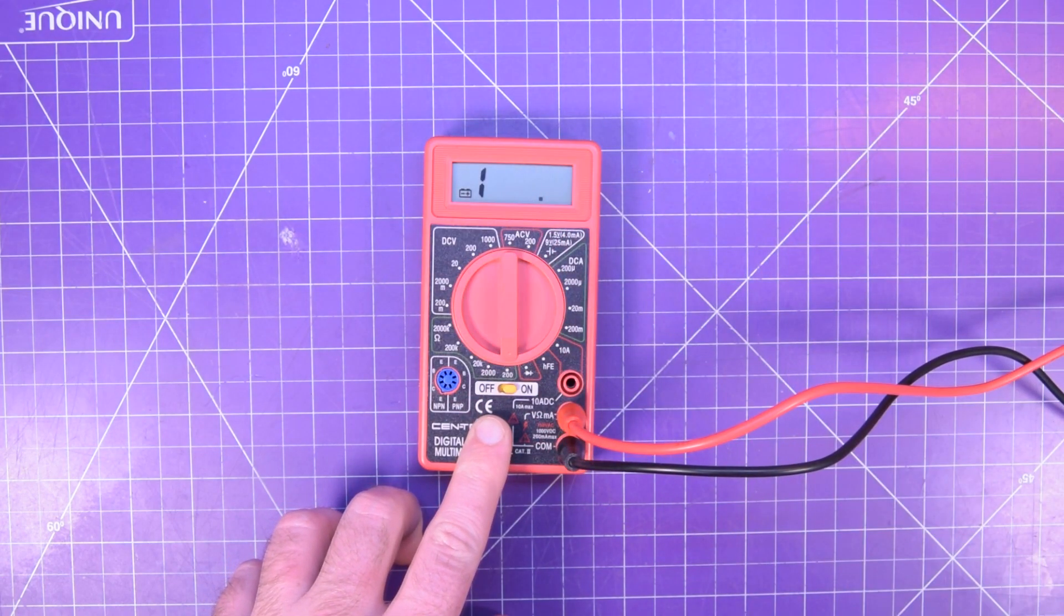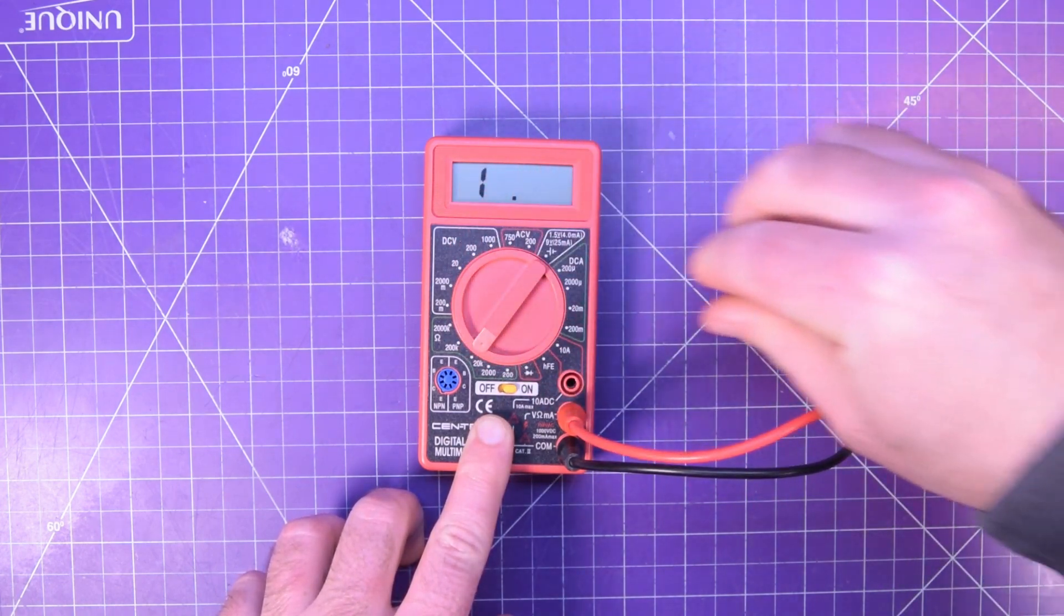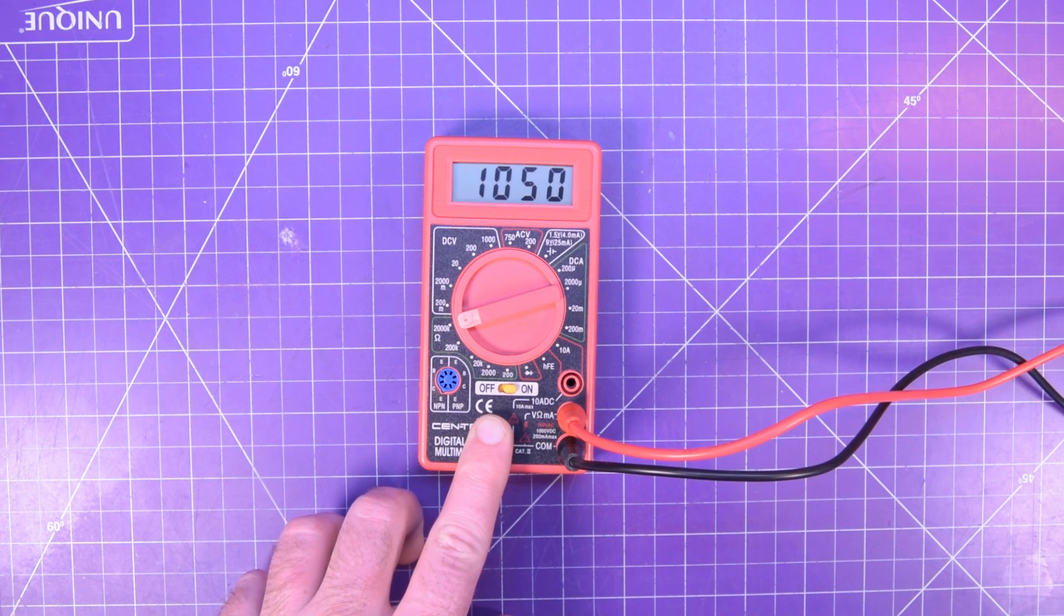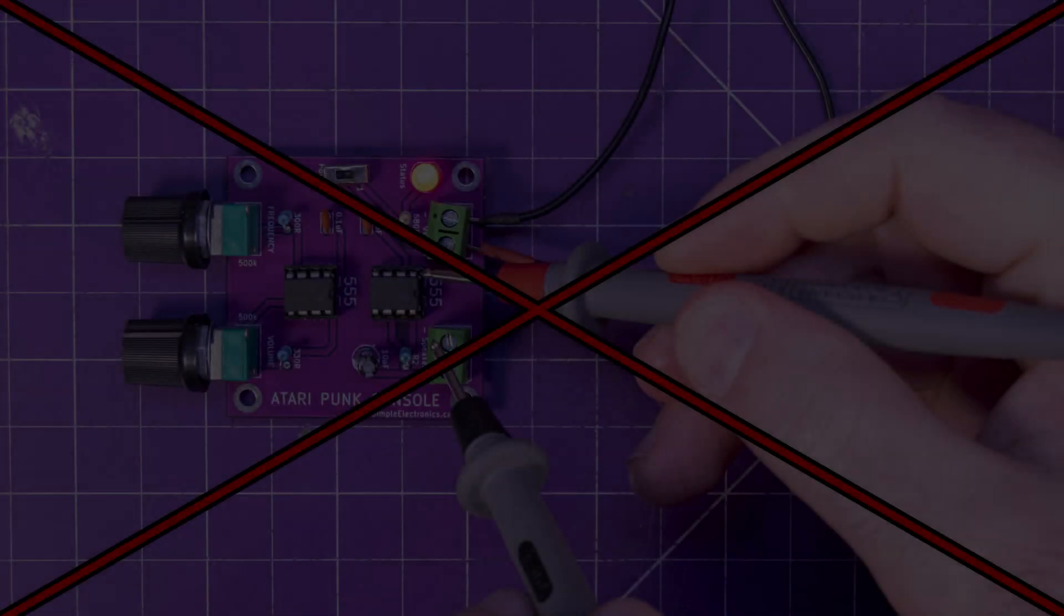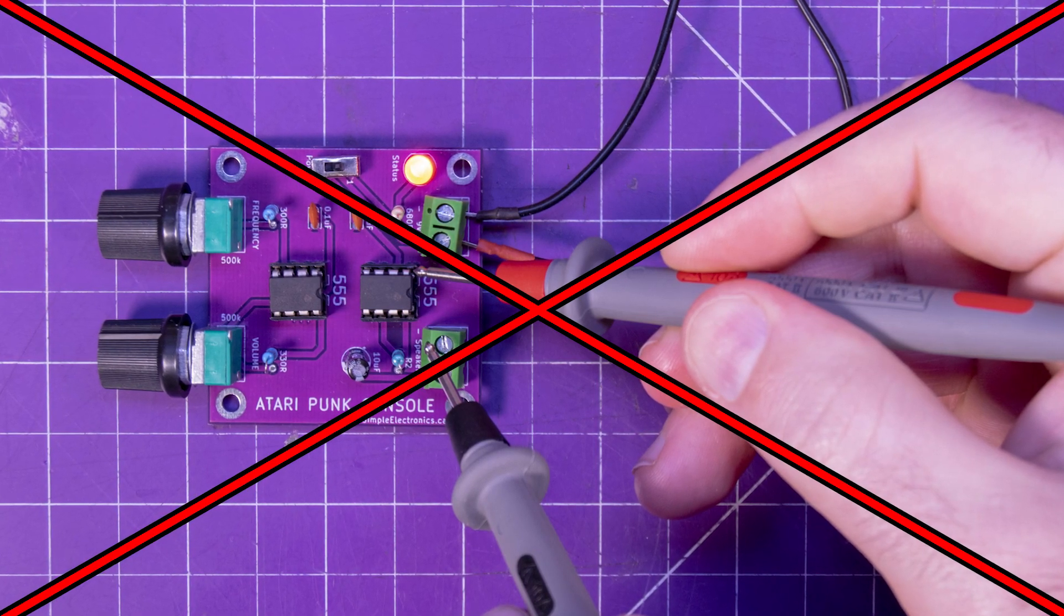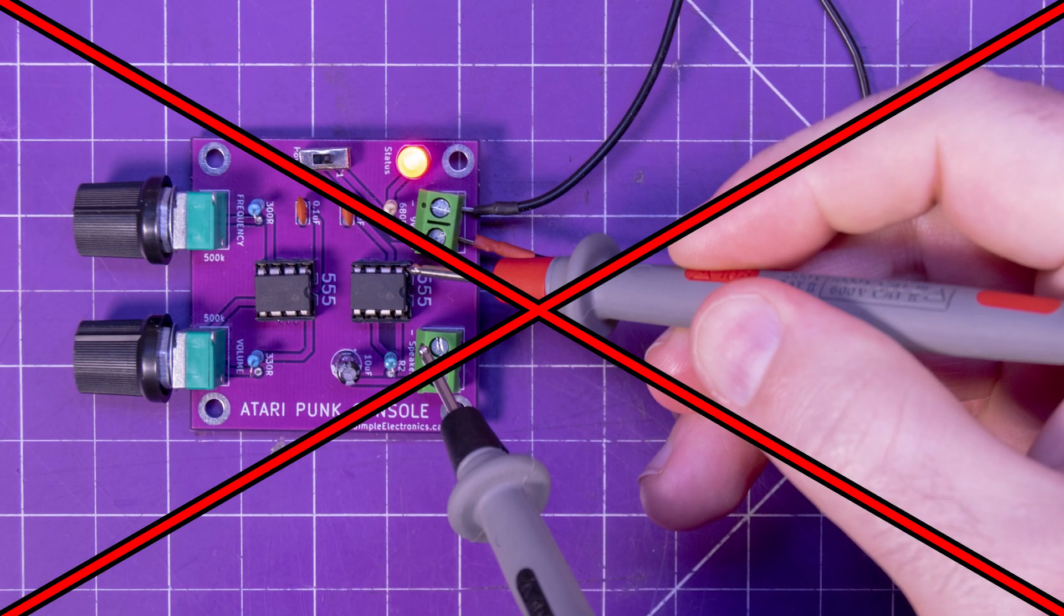Just select the range that is higher than what you expect to see. If you have no idea what to expect, just start at either end of the range while testing and work your way to the other end until you get a concrete measurement. As with continuity, your circuit must be isolated or disconnected from power before you test for resistance. Ideally, you would remove it from the circuit altogether.